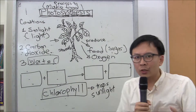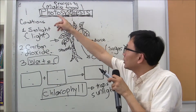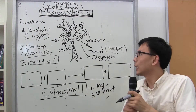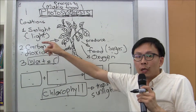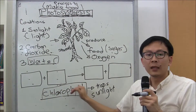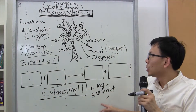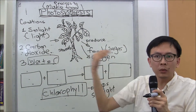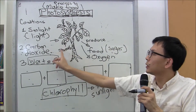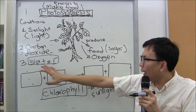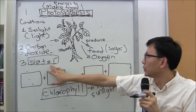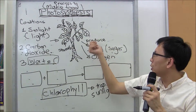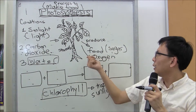So photosynthesis is the process for plants to make food. In order for that to happen, plants need light, which chlorophyll found in leaves helps to trap. It gets carbon dioxide from the surrounding, which enters the plants through the stomata. And lastly, it requires water. So when all these conditions are present, photosynthesis occurs and produces food — which is sugar — and oxygen.